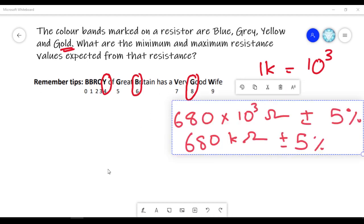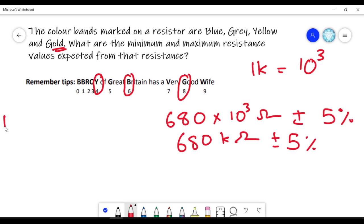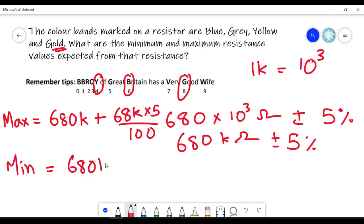So, automatically, maximum value is equal to 680k plus 680k into 5 by 100, 5 percentage extra. Now, minimum value is equal to 680k minus 680k into 5 by 100.